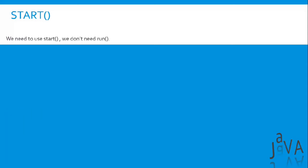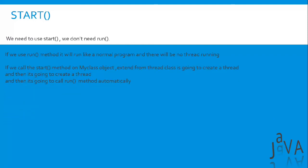We need to use the start method — we don't use the run method directly. Why? If we use the run method, it will run like a normal program and there will be no thread running. If we call the start method on a MyClass object that extends Thread, it's going to create a thread and then call the run method automatically. So we use start, not run.